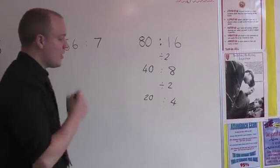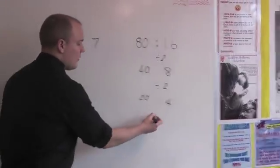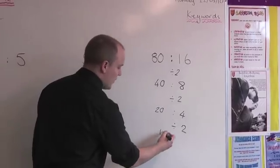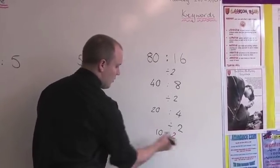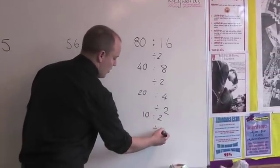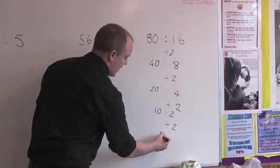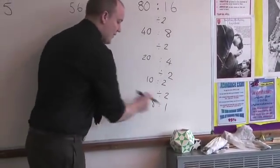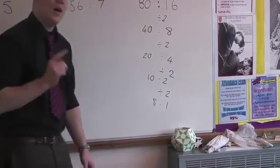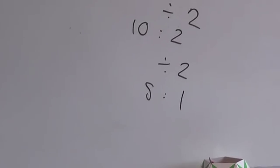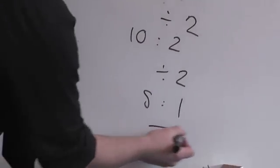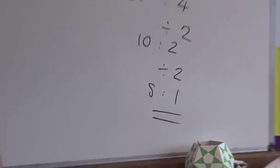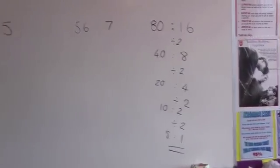And I'm going to keep going — dividing by another 2 gives 10 to 2. I'm going to do it one more time, and you should see that this is as far as I can go, because there are no more common factors to 5 and 1, apart from themselves. Now, that is the simplest ratio we can find.